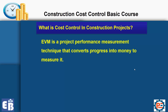EVM is a project performance measurement technique that converts progress into money to measure it. As you know, when you compare two things you need to compare apples to apples — you need to convert all your progress into a similar term or condition for comparison. EVM uses money as that common term or condition of comparison, but this is not the case in cost control.